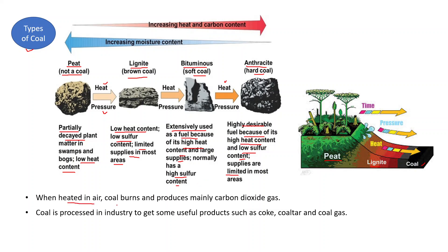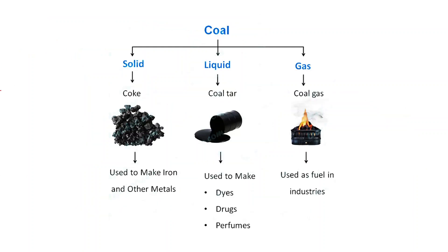When coal is heated in air, it burns and produces mainly carbon dioxide. Coal is processed in industries to get useful products such as coke, coal tar, and coal gas. When coal is heated in the absence of air, this process is known as destructive distillation of coal, which produces three substances: the solid coke, the liquid coal tar, and the gas coal gas. Coke is used to make iron and other metals, coal tar is used to make dyes, drugs, and perfumes, and coal gas is used as fuel in industries.